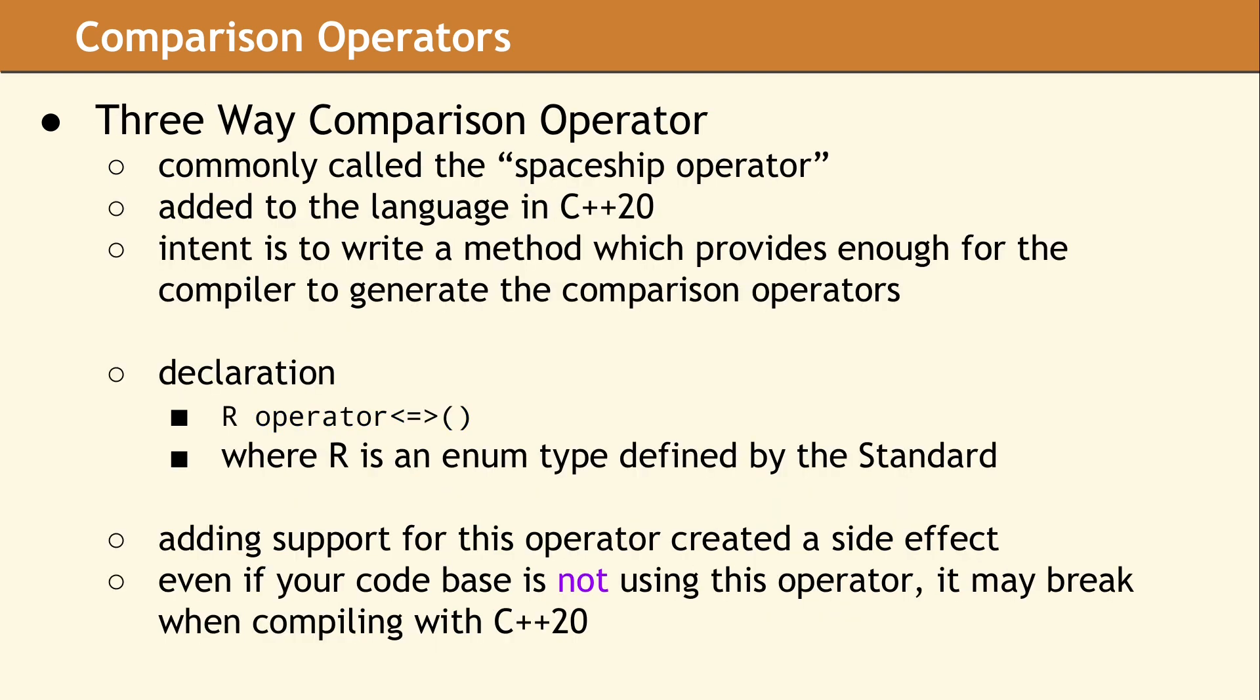Comparison operators changed in C++20 with the addition of the three-way comparison operator. The syntax for this is operator less than, equal, greater than, and is often referred to as the spaceship operator, due to the appearance of these three concatenated symbols. The purpose of this operator is to write one method which provides enough information for the compiler to generate or synthesize the real comparison operators. This can reduce the amount of repetitive code developers were required to produce, and instead transfer this responsibility to the compiler.